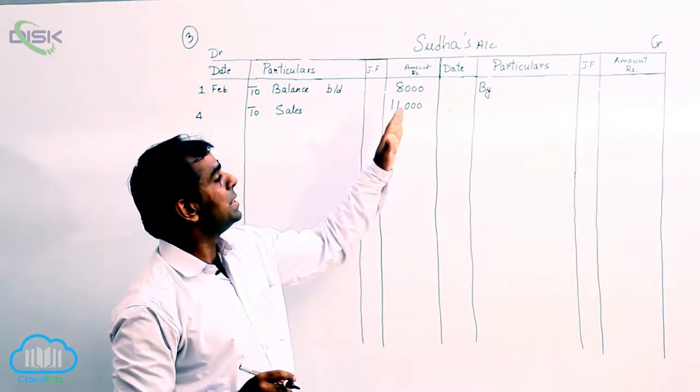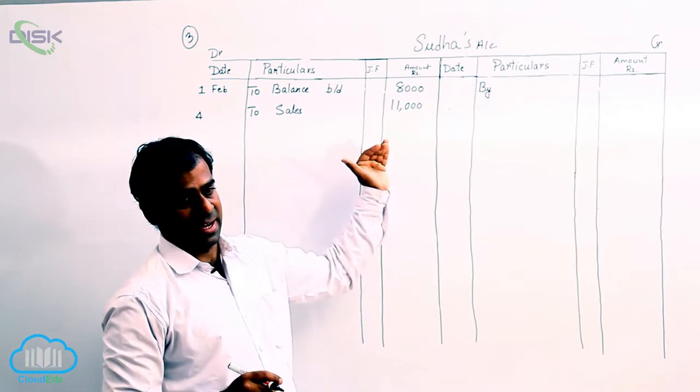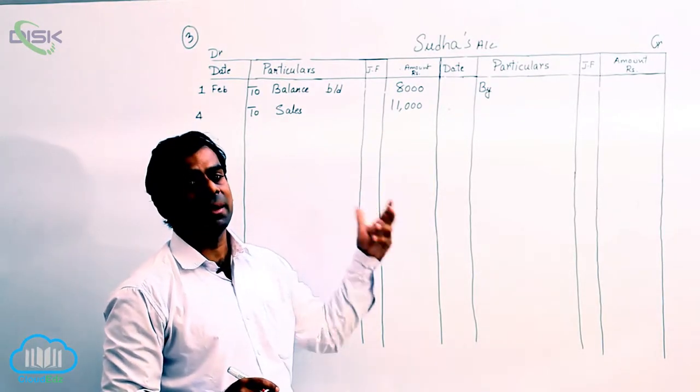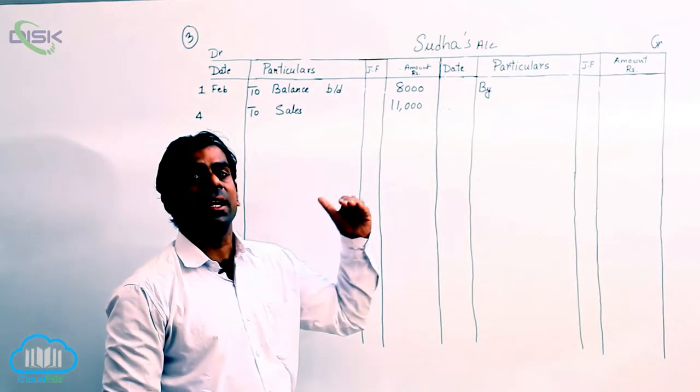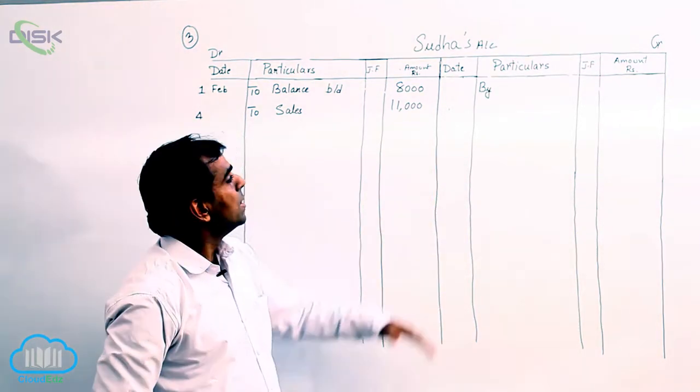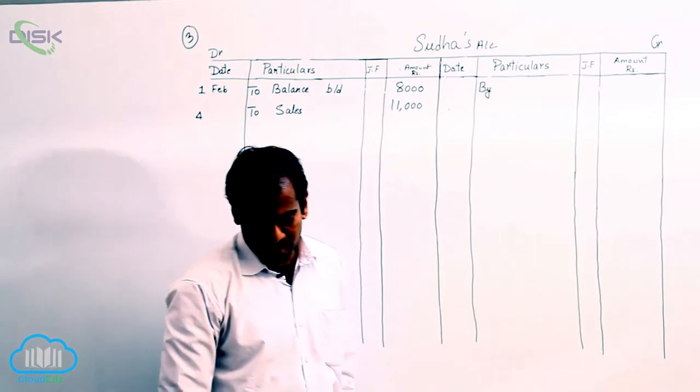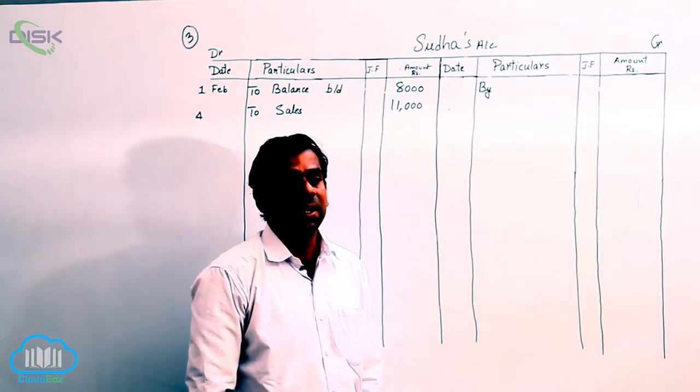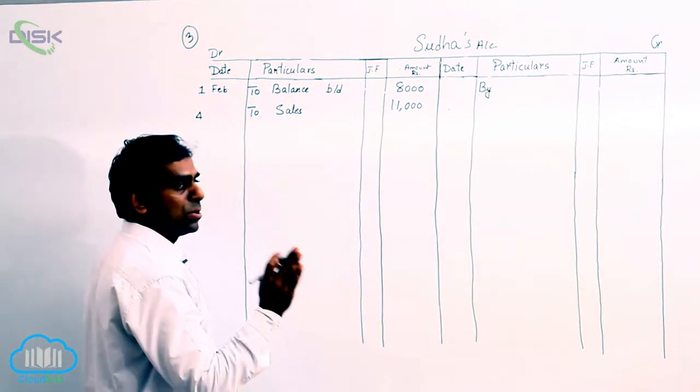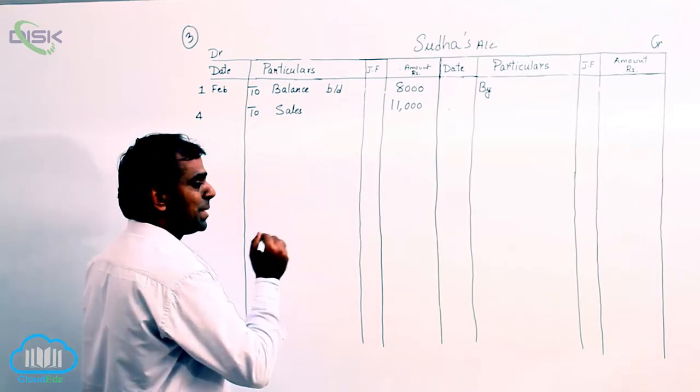Because it is a credit sale. So in a credit sale or a credit purchase we discussed that goods can be returned. So as a result you find Sudha returning goods to you to the extent of 4000. So when Sudha returns the goods to you, you are getting back the goods, it becomes sales return.